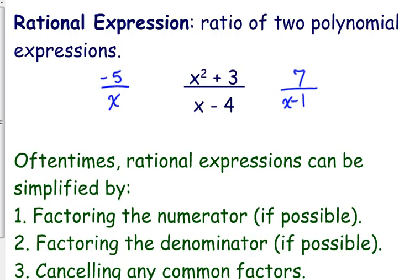You don't necessarily need to write this down, just listen to what I have to say about it. A rational expression, you need to be familiar with that term. It is a ratio of two polynomial expressions - two polynomial expressions in a ratio means that you have variables in the top and bottom. Those three expressions are examples of rational expressions.